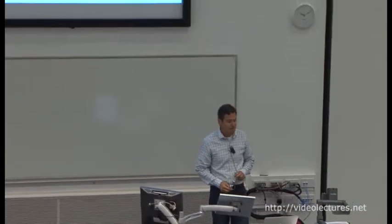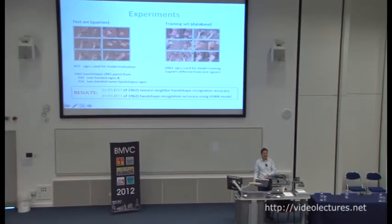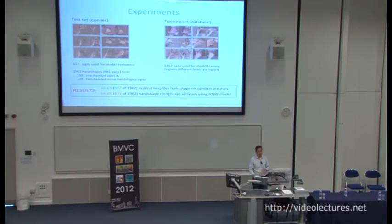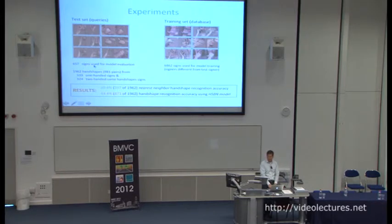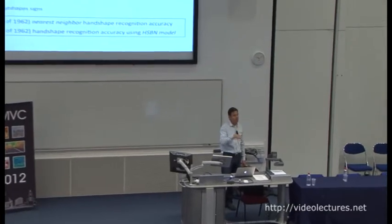There are models for one-handed signs, two-handed symmetric signs like 'book,' and two-handed non-symmetric signs like 'give.' We've used this model in handshape classification with a signer-independent evaluation — the training set uses different signers than the test set. By using the model for inference, we get better accuracy in classifying handshapes. This is just one subsystem within the larger retrieval system.